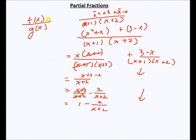The term x/(x+2) still doesn't satisfy the condition — the degrees are equal. So I add and subtract 2: I get (x+2)/(x+2) - 2/(x+2), which simplifies to 1 - 2/(x+2). So whenever the degree of the numerator is greater than or equal to the denominator, you need to separate out terms. This comes with experience as you solve more and more problems, but that is the general approach to solving partial fractions.